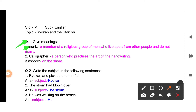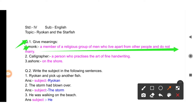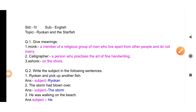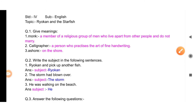Jo spiritual hota hai, religious hota hai — hum log dekhte hain na ki koi insaan jo bhagwa color ka, girua color ka dhoti pehenta hai, ya white color ka pehenta hai — wo log are called a monk. A monk is a member of a religious group of men who live apart from other people and do not marry. They live a different kind of life.